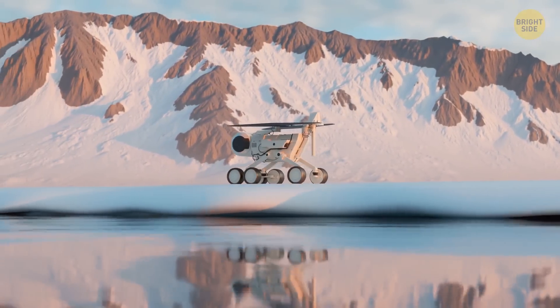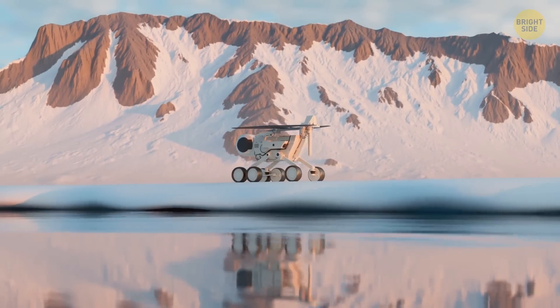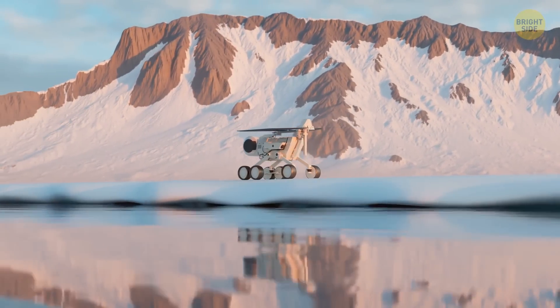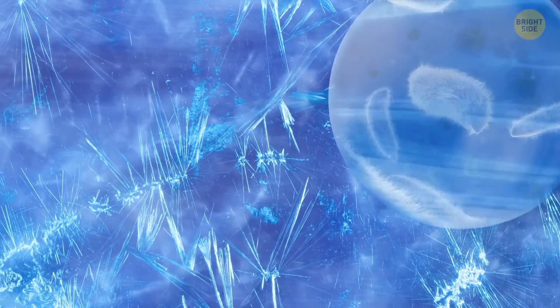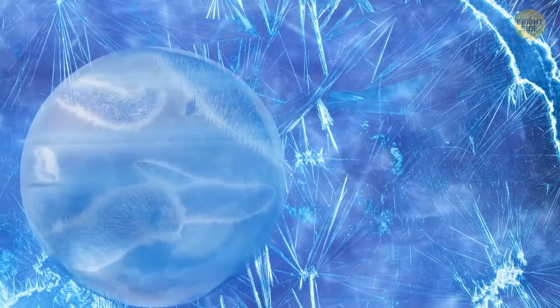All this means that Enceladus is now a top candidate in the search for life within our solar system. Of course, life requires more than just water, and we won't find any animals there or anything like that. But we might find some microscopic organisms, and that's awesome too.